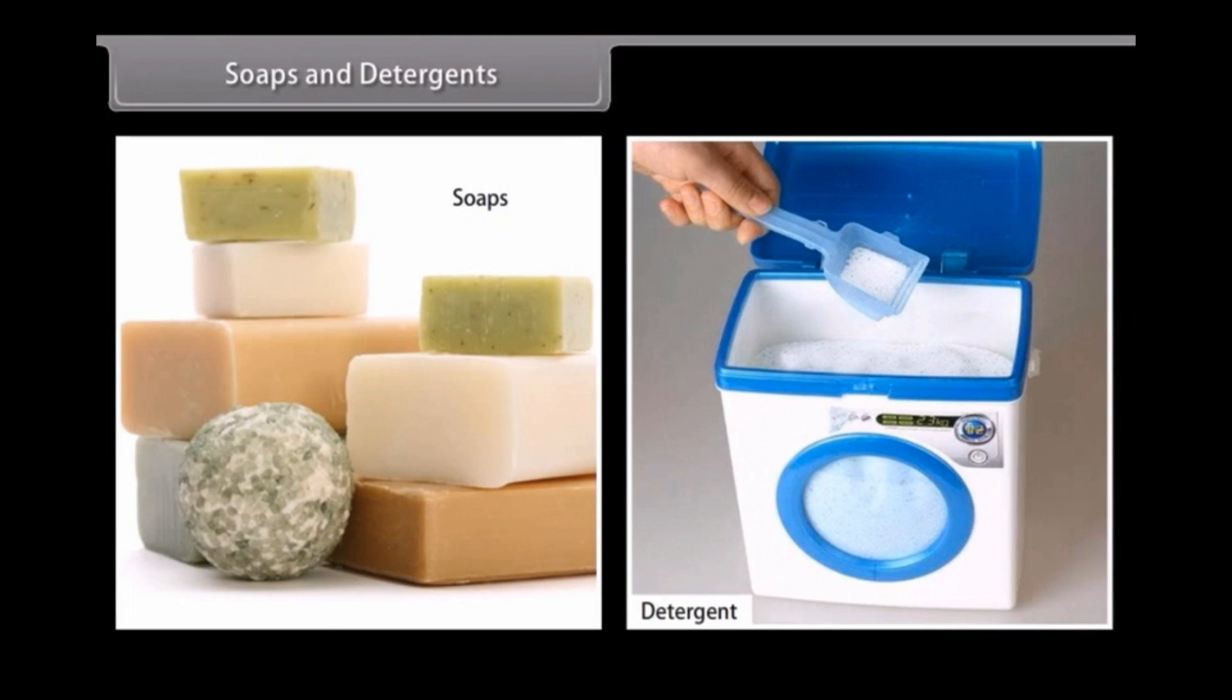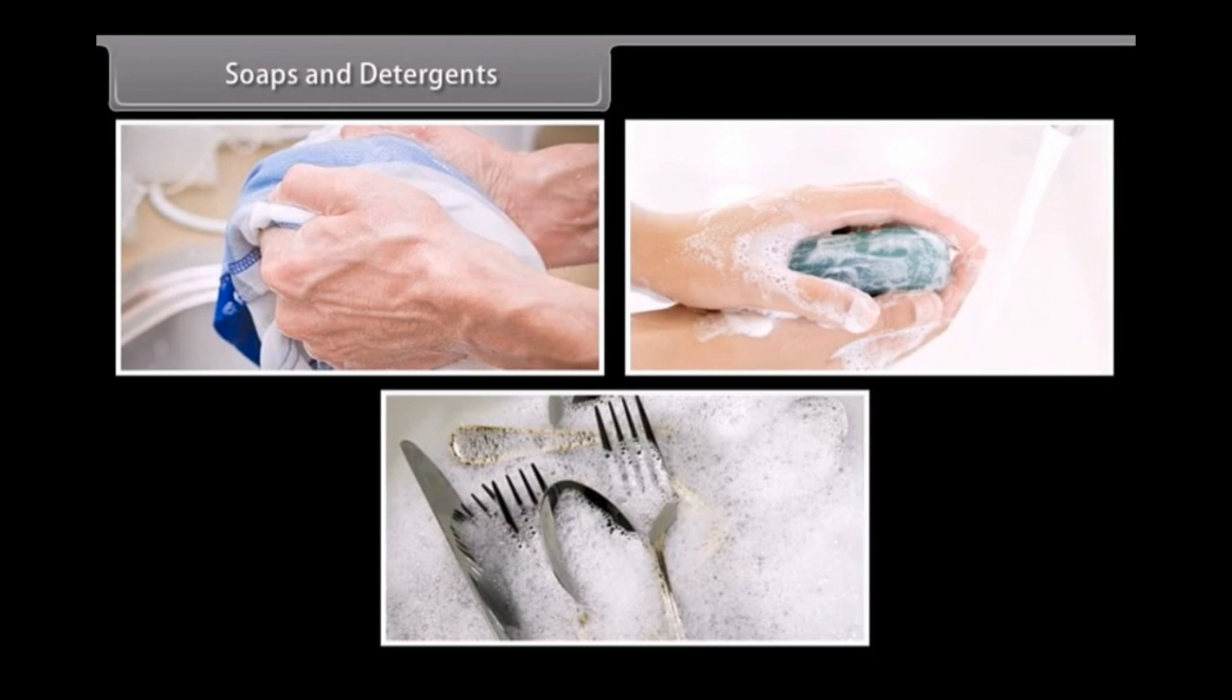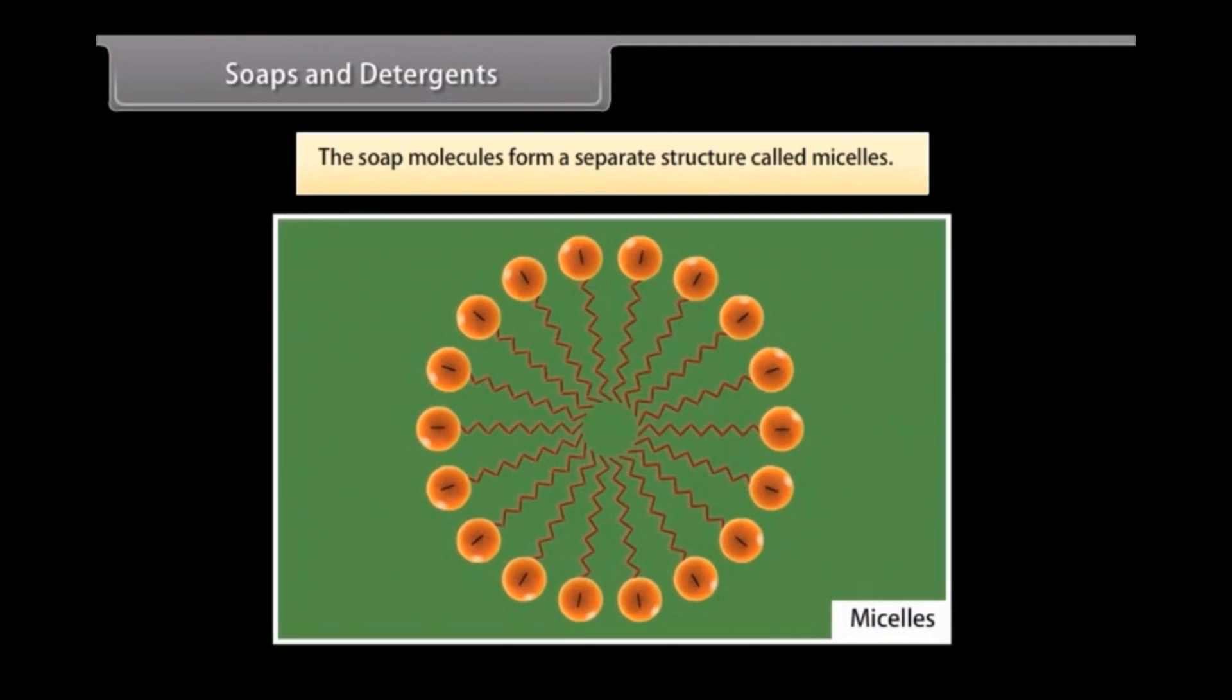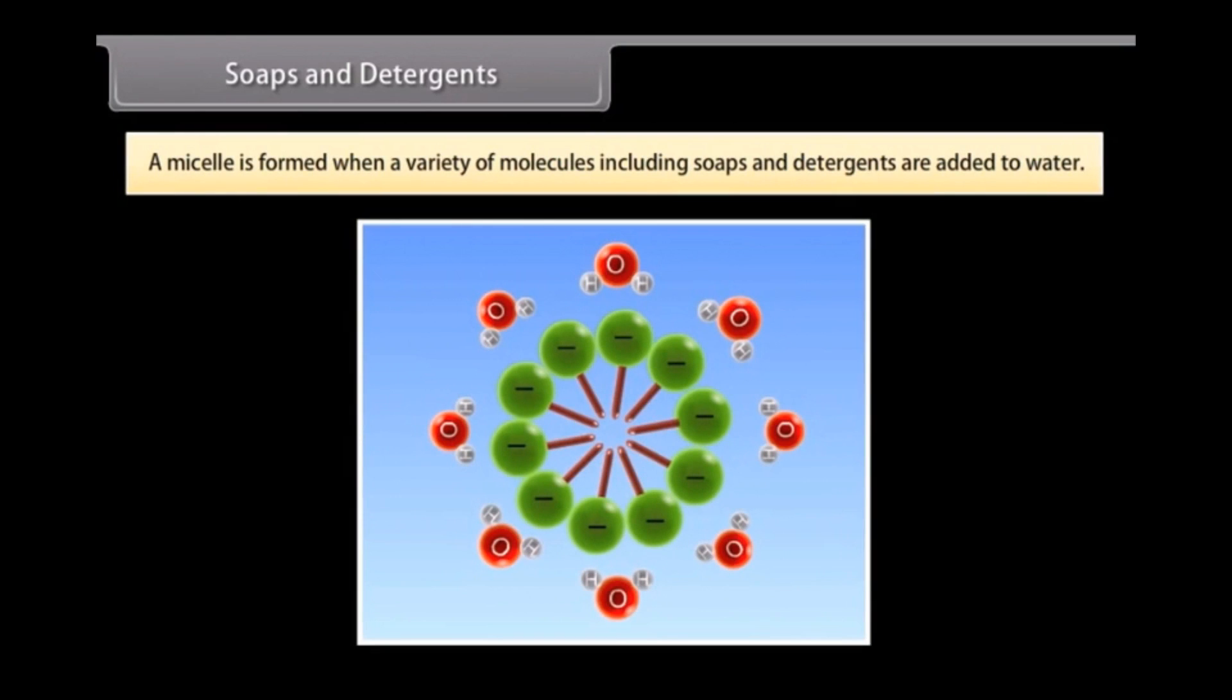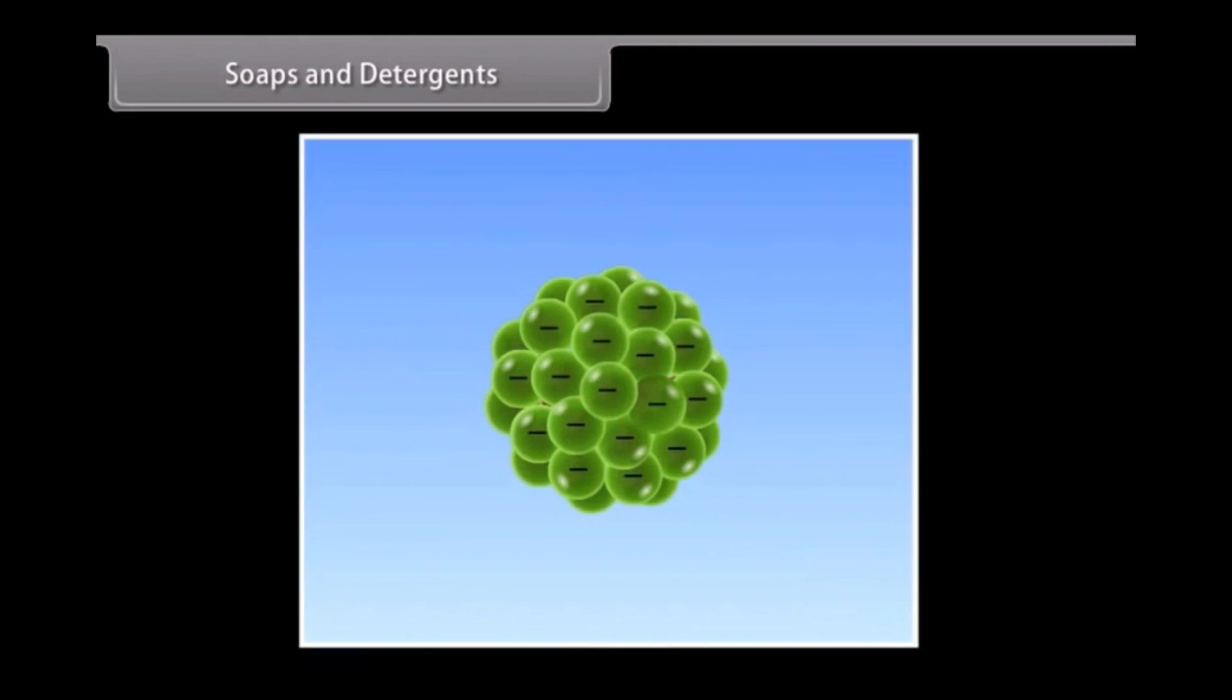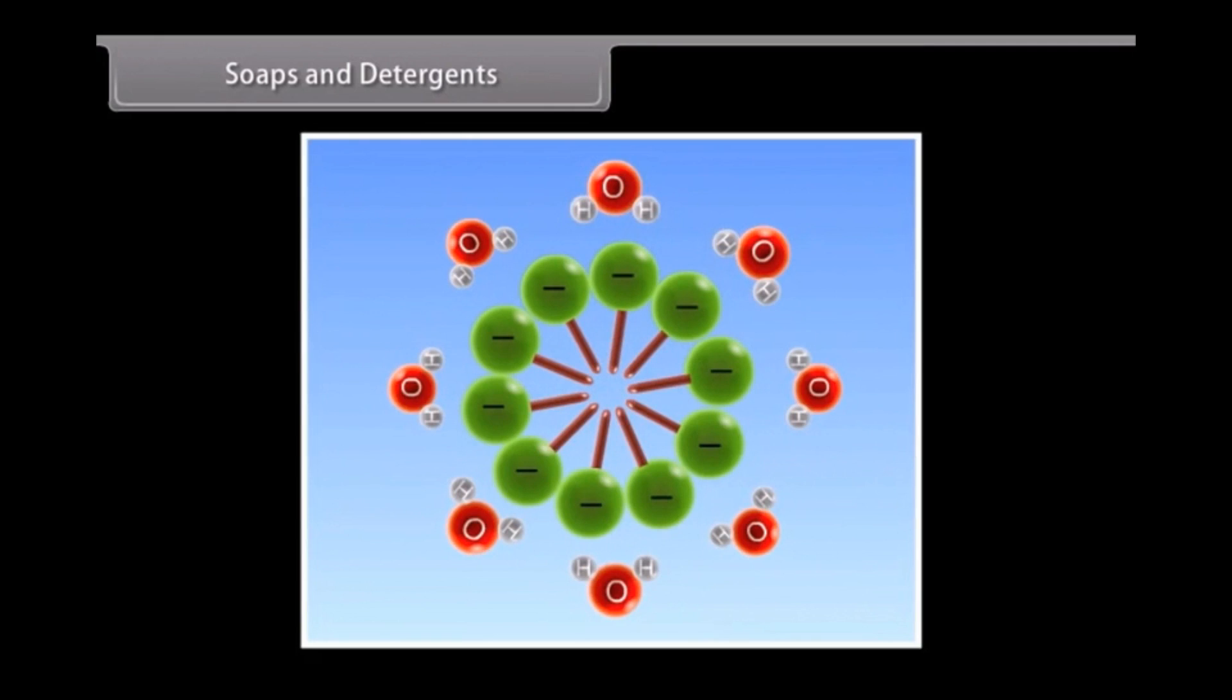Soaps and detergents. Soaps and detergents are used in our daily life to wash clothes, clean hands, clean utensils, etc. The substances that form soap are sodium or potassium salts with long chains of carboxylic acids. The soap molecules form a separate structure called micelles. A micelle is formed when a variety of molecules, including soaps and detergents, are added to water. These molecules must have a strong polar head and a non-polar hydrocarbon chain tail. When you add this molecule to water, the non-polar tails of the molecules clump into the center of a ball. This is because they are hydrophobic or water-hating. The polar head of the molecule interacts with the water molecules on the outside of the micelle.